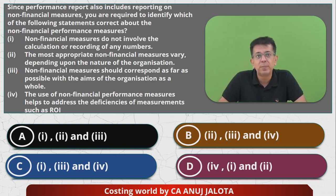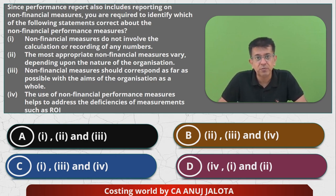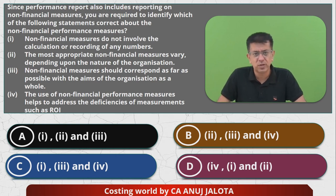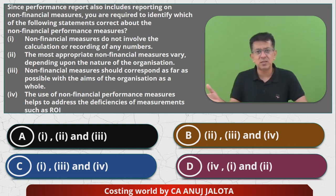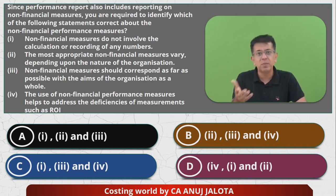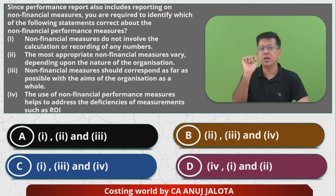Point two: the most appropriate non-financial measures vary depending upon the nature of the organization. This is correct. A for-profit organization would measure profits, while a not-for-profit organization — say an old age home — would measure how happy the senior citizens are. A teacher might measure student results or how well students are doing in the long run. So point two is correct, as every organization measures different things.